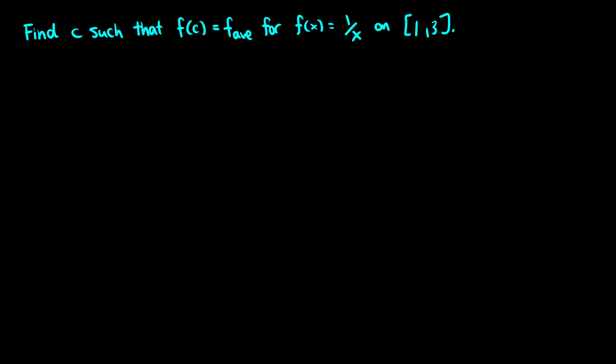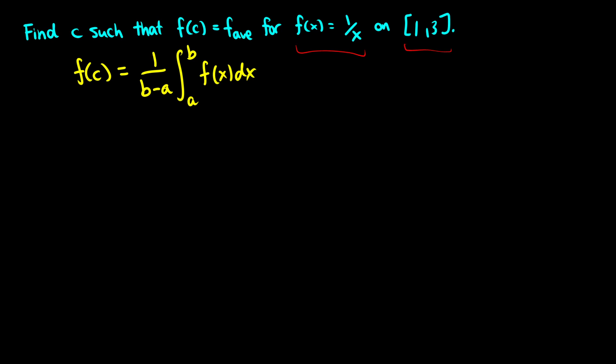The next question is simpler. We're finding the point c on [a, b] where f of c equals the average for a function. We write out the formula: f of c equals 1 over b minus a times the integral from a to b of f of x dx. We know our function and our interval — the endpoint is 3 and the beginning point is 1 — so this is 1 over 3 minus 1 times the integral from 1 to 3 of 1 over x dx.